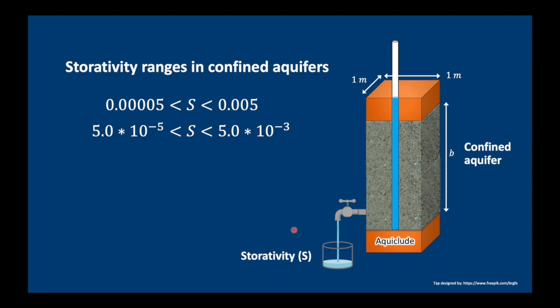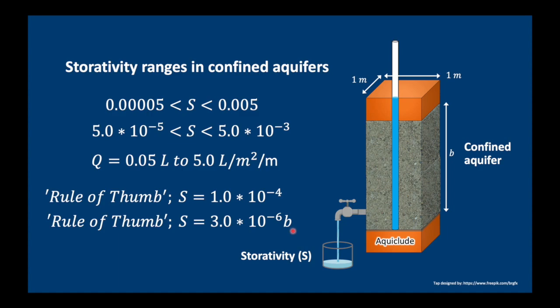Here's some normal storativity ranges in confined aquifers. It goes from about 10 to the minus 5 to 10 to the minus 3. What this means in real terms is that from each square meter of aquifer and 1 meter drop in pressure, you can only get about 0.05 liters to a maximum of 5 liters. So that's not a lot of water compared to how much we could drain from our unconfined aquifer. If you don't know what the storativity is of a confined aquifer, just assume it's 10 to the minus 4. Another rule of thumb is 3 times 10 to the minus 6 times the aquifer thickness.